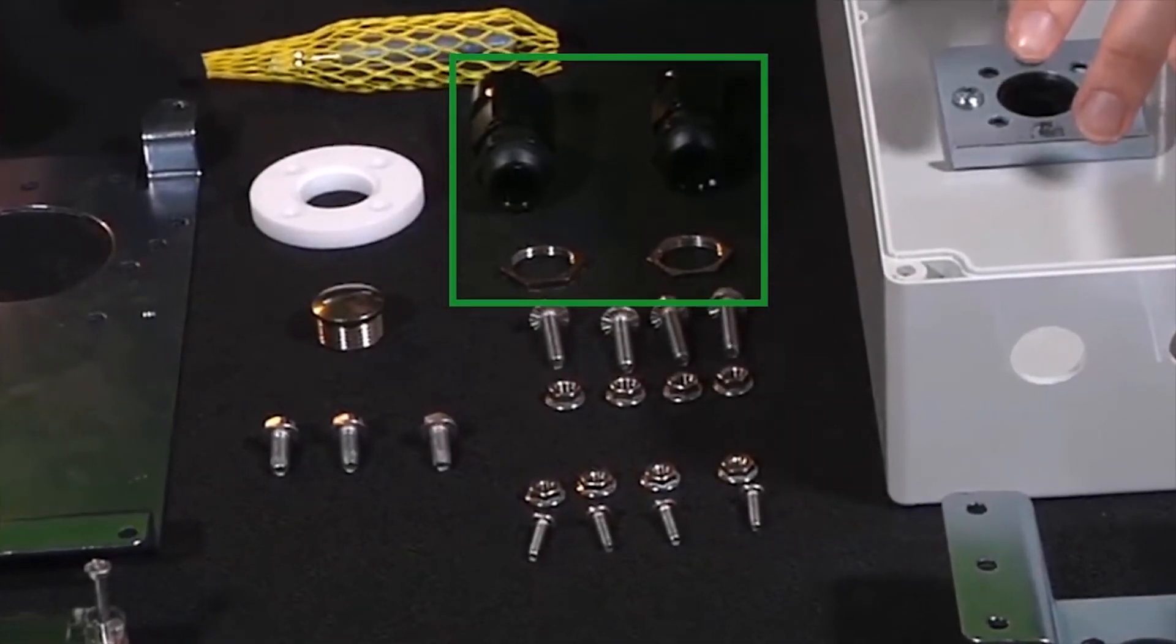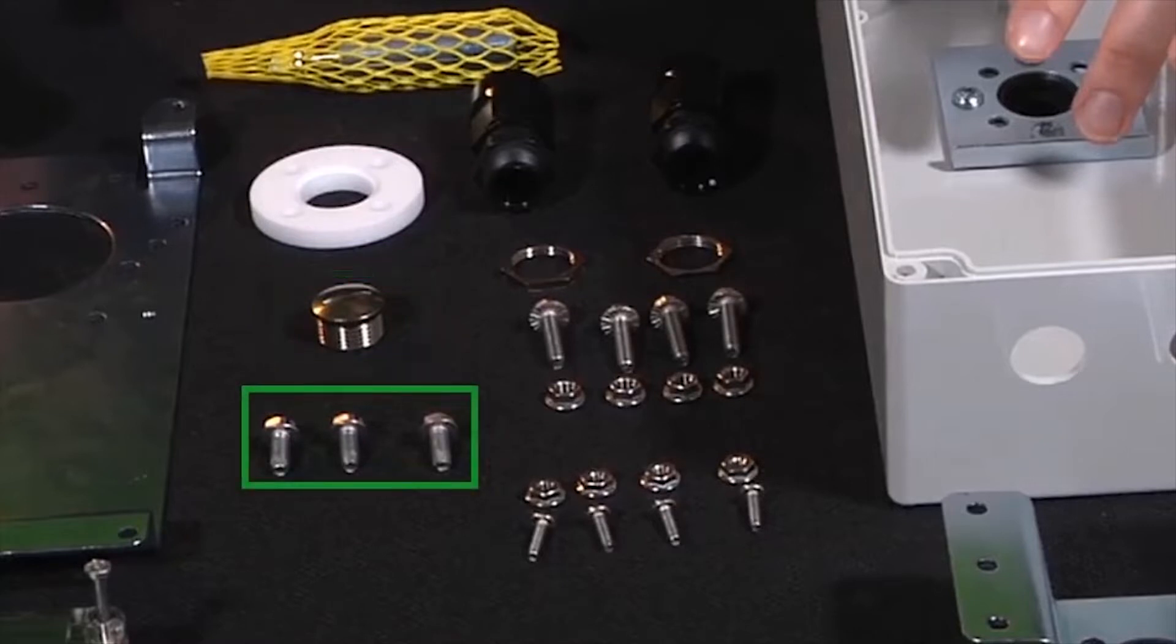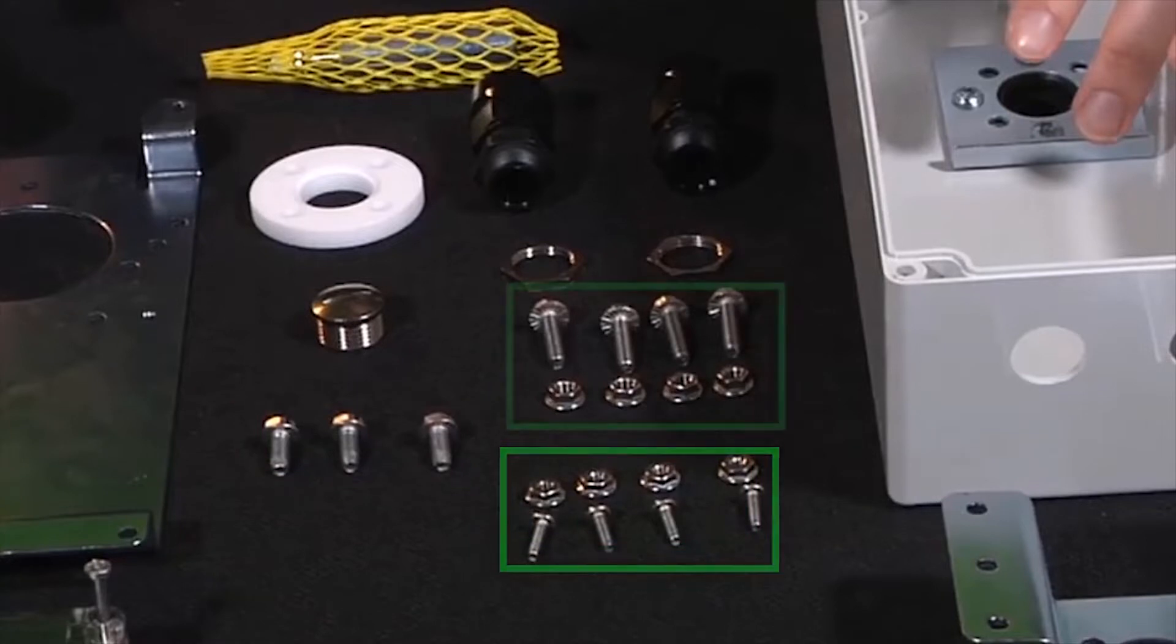Two cable clamps with nuts, one shaft in a protective pocket, a thermal spacer, one plug, three self-tapping screws, and we have four screws and nuts for assembling the enclosure, and four screws and nuts for attaching it to the valve.